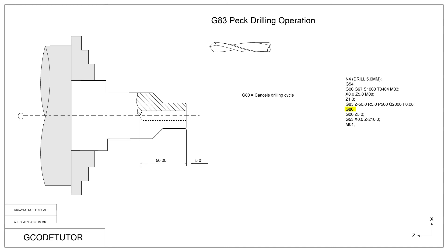After the peck drilling cycle is complete, the machine retracts to the last given Z position — in this case 1mm off the face of the job. We cancel the drilling cycle using G80, the code that cancels all cycles. Since the drill is only 1mm off the face of the job, I like to rapid it away to at least 5mm clearance to ensure it can safely rapid to the machine home position without getting caught up in swarf.